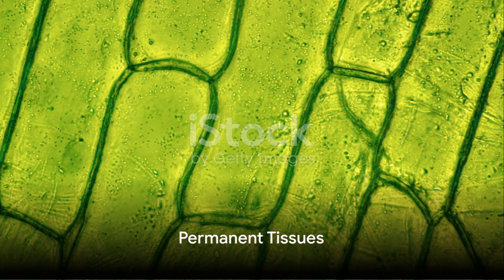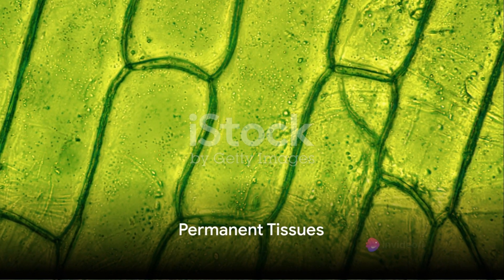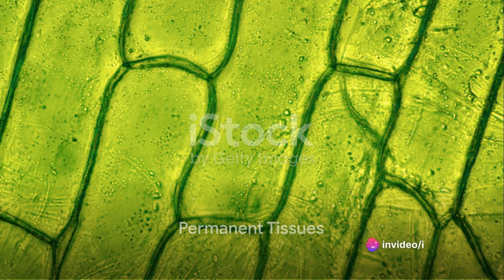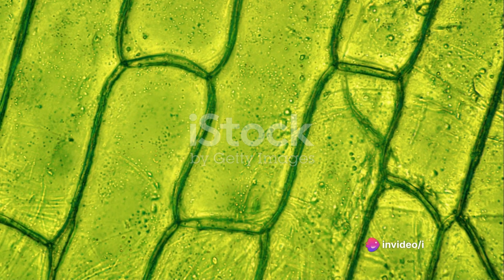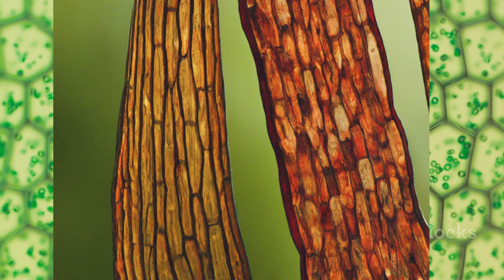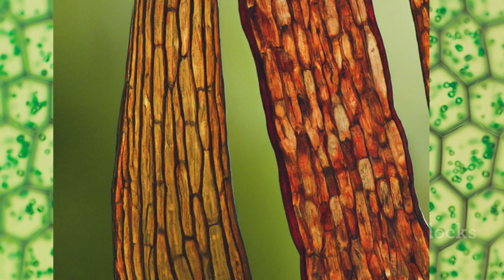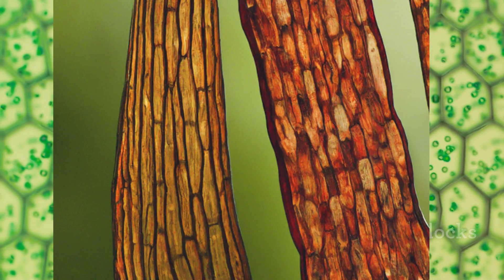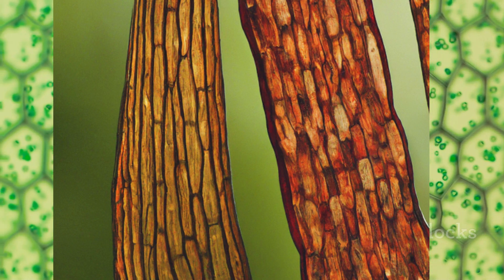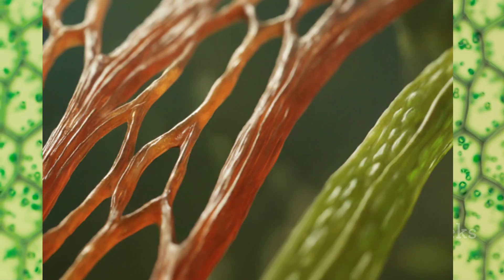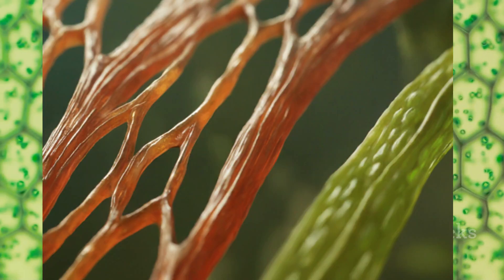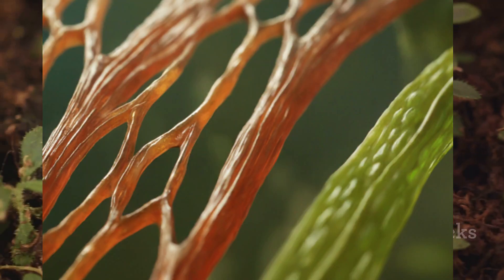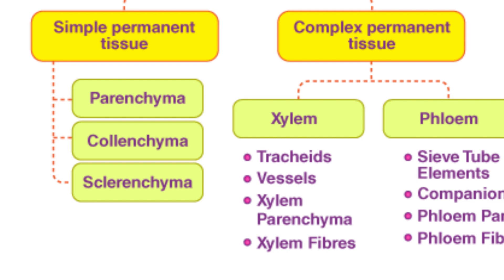Moving on to the second category, we have permanent tissues. These tissues have lost the ability to divide. They are responsible for carrying out specific functions within the plant. Permanent tissues are further divided into two types: simple and complex permanent tissues.